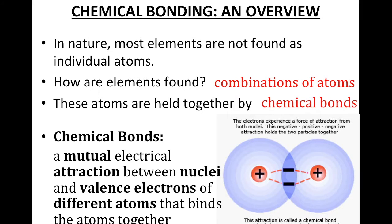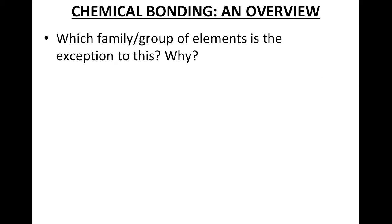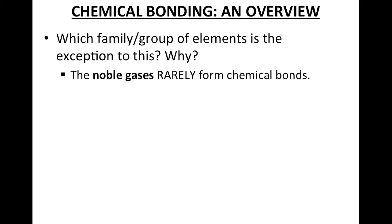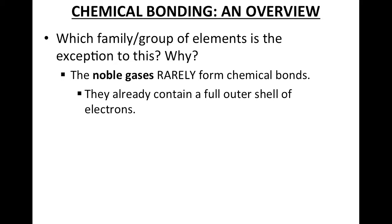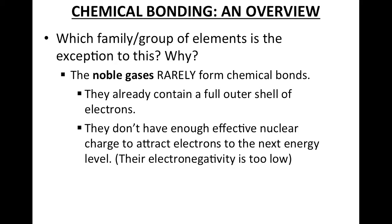Which family group of elements is the exception? Most of you have said this before — it's the noble gases. The noble gases rarely form chemical bonds because they already have a full outer shell of electrons. They're 'happy' because they already have a full outer shell, which makes them more stable. Atoms always want to get to a full outer shell.